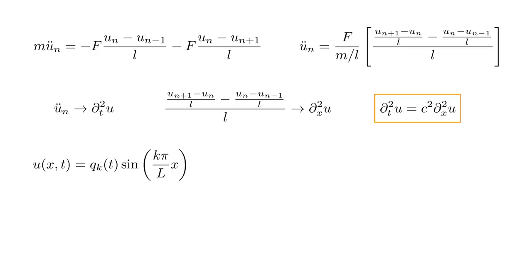However, there are so-called characteristic modes of the string that are relatively simple to describe. These have the form of a single function of time, q_k of t, times a spatial sine wave, sine of k pi over l x, where k is a positive integer.